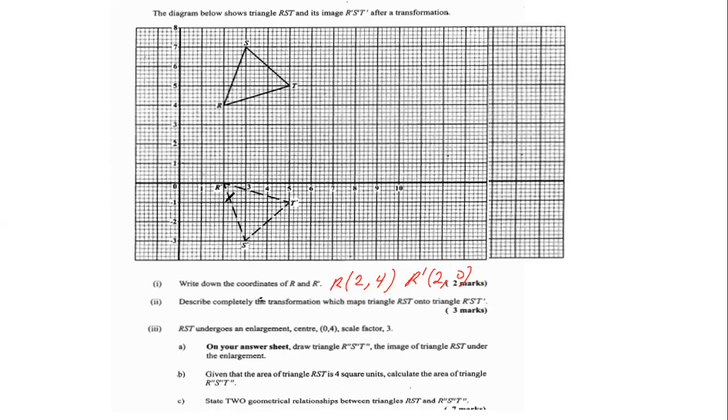Now, so you're telling me that the RT is facing the R'T'. If it's a reflection, they have to face each other, am I right? If it's a reflection, the object on one side should face the same side of the image.